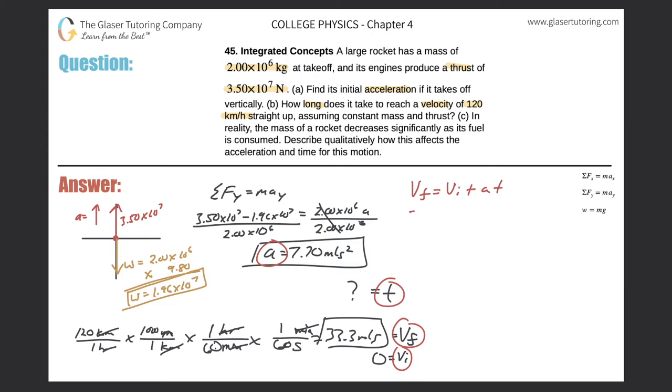So the final velocity we calculated to be 33.3 after our conversion. The initial was zero. The acceleration is 7.70 meters per second squared, and the time now is going to be found in seconds. Simply divide both sides by 7.70.